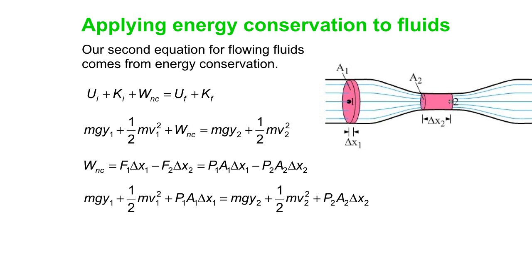So you can expand WNC into two terms, and you can move the minus P₂A₂ΔX₂ to the other side and make it positive. So a lot going on in this equation. Now it's six terms, not just five, but let's divide through by volume.